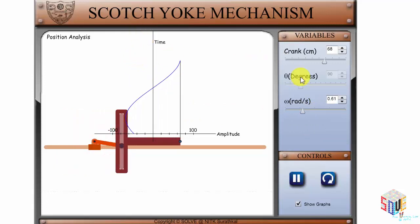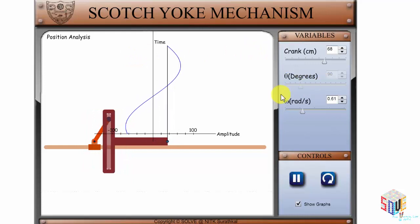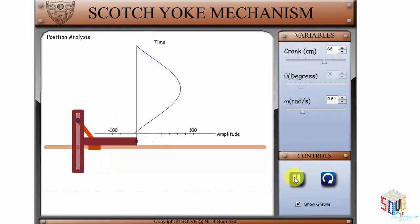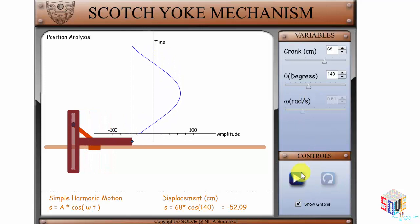If you want to change the angle to analyze various velocities of the crank mechanism, pause the animation by clicking here in controls and then change the angle here.